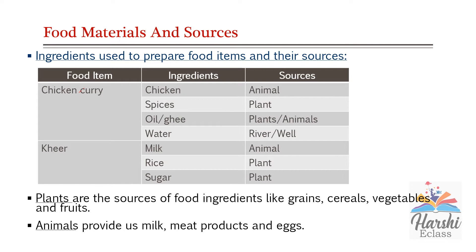For example, to make chicken curry we need: chicken — the source is an animal; spices — spices come from plants; oil or ghee — oil is a plant product whereas ghee is an animal product; and water — water comes from the river or well. Another example: for making kheer we need milk, rice, and sugar — milk is an animal product, while rice and sugar are plant products.